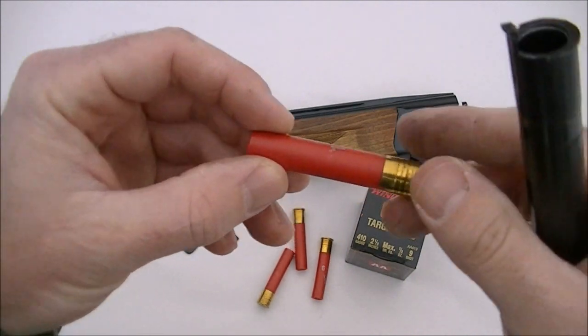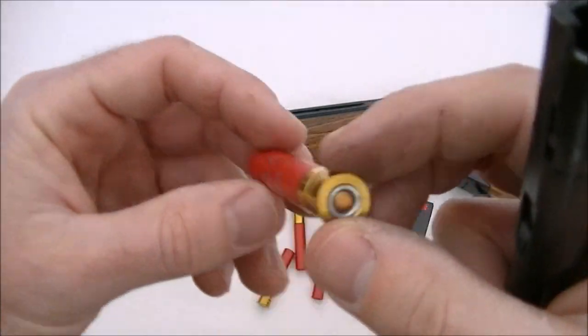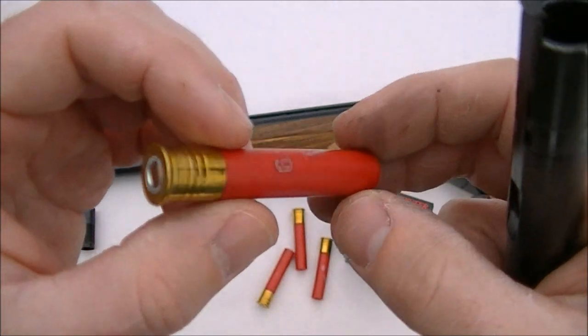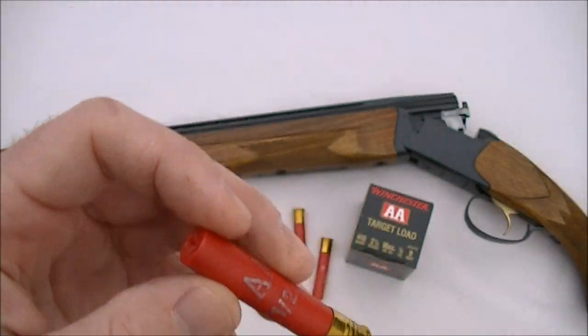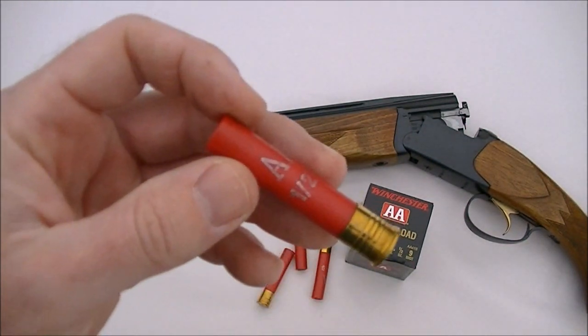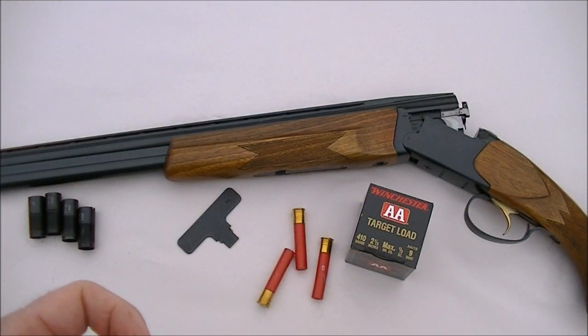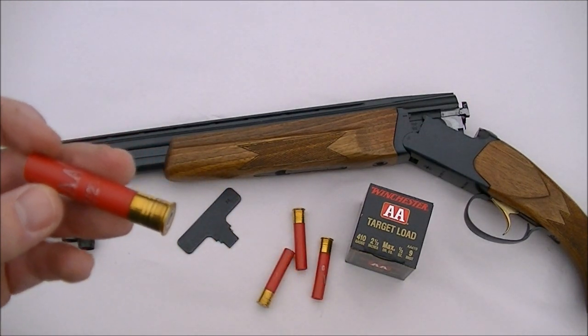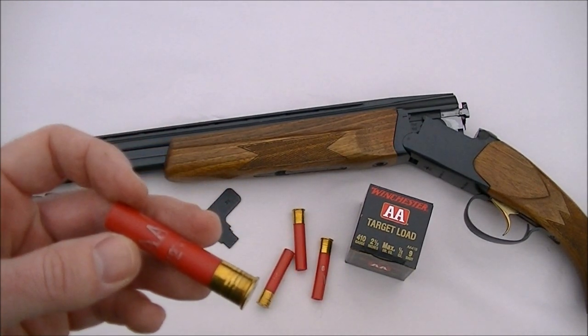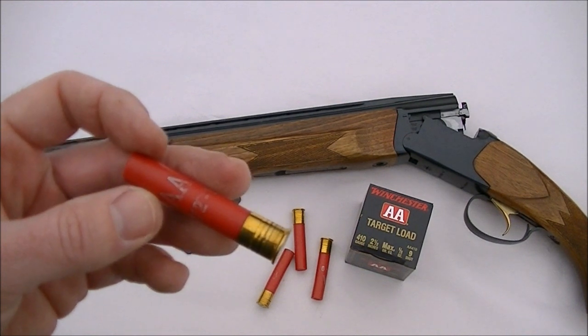We're going to use these two and a half inch 410 shells by Winchester. These are some old compression form shells. This is a 28 inch barreled gun and I'm going to shoot the patterns from about 15 yards, keeping it pretty close so I can get all the pellets on these relatively small pieces of paper. Let's see how this works out.